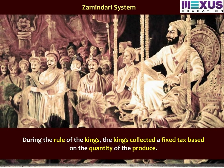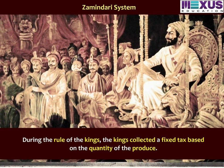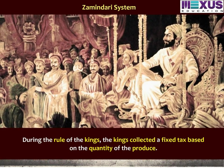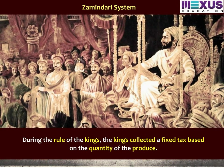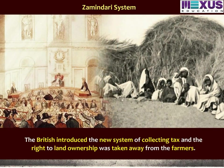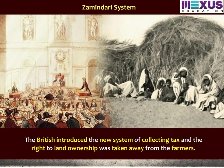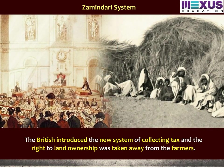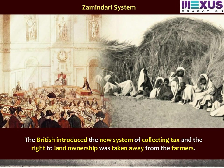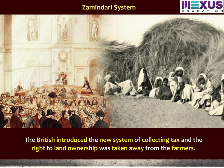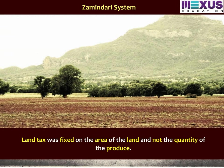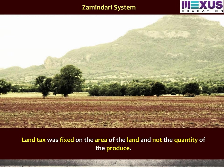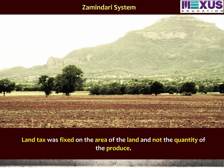During the rule of the kings, a fixed tax was collected based on the quantity of produce. The British introduced a new system of collecting tax and the right to land ownership was taken away from the farmers. Land tax was now fixed on the area of the land and not the quantity of the produce.